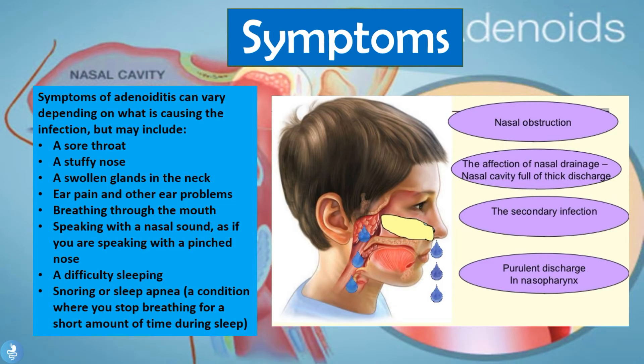Symptoms of adenoiditis can vary depending on what is causing the infection — whether bacteria or a virus. But the usual symptoms include a sore throat, a stuffy nose, swollen glands in the neck, ear pain and other ear problems, breathing through the mouth, speaking with a nasal sound as if speaking with a pinched nose, difficulty sleeping, and snoring or sleep apnea.